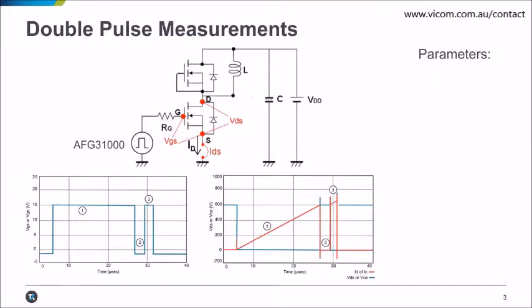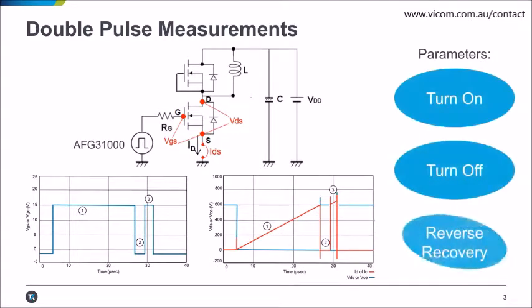Typical measurements are shown in the figure. The overshoot current from the second pulse is due to the reverse recovery of the diode. The oscilloscope is used to extract the timing and energy loss parameters from the waveforms, such as turn on, turn off, and reverse recovery parameters.